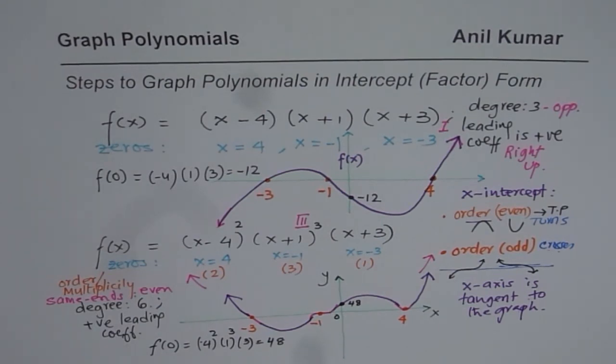So that is how it is. So in general, if you have to graph polynomials, starting from the intercept or factored form, find the x-intercepts. Also, find multiplicity or order of zeros as that decides the behavior of the graph at the x-intercept. If it is linear, it just crosses like a line. If it is even, it will turn at the x-axis. And if it is odd, x-axis will become tangent to the graph and the graph crosses the x-axis.